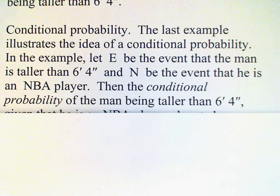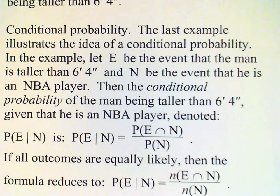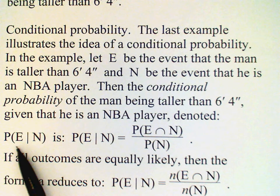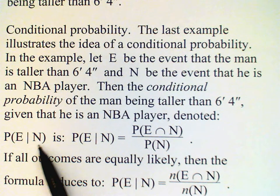Then we can express the conditional probability of the man being taller than 6 feet 4 inches given that he is an NBA player in this way. We write the probability of the event that we are interested in, namely that he is taller than 6 feet 4 inches, then a vertical bar, and then the conditioning event, in this case the fact that we know he is an NBA player.